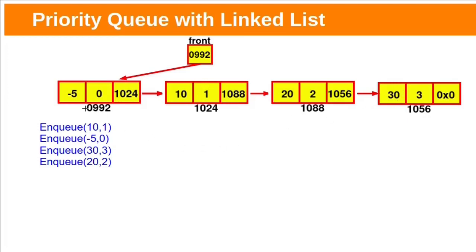This is the final priority queue, rearranged for better visualization — the links are not changed. To add a new node to this list, we need to find the correct position of the new node. In the worst case, we need to compare with all nodes in the list, so the time complexity for the enqueue operation is O(n).